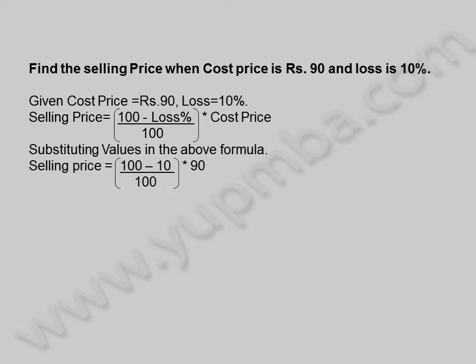Substituting values in the above formula, selling price is equal to (100 minus 10) divided by 100, into 90. That is equal to 90 by 100 into 90.